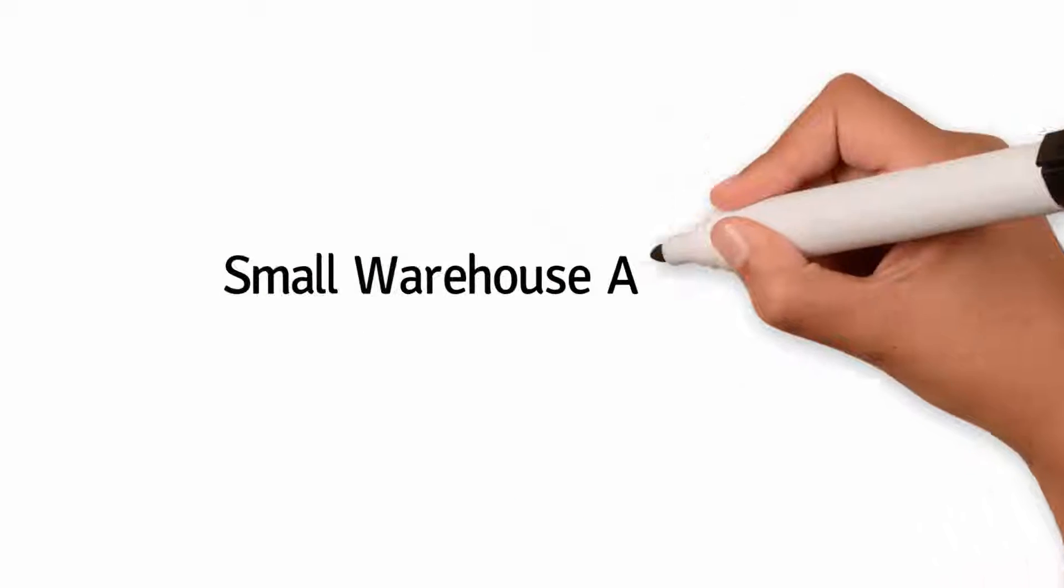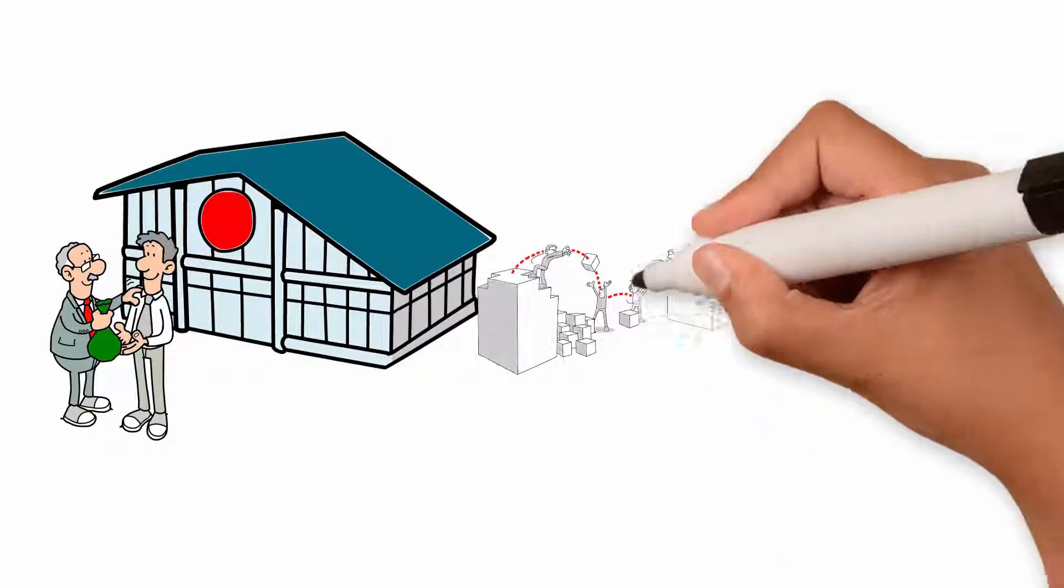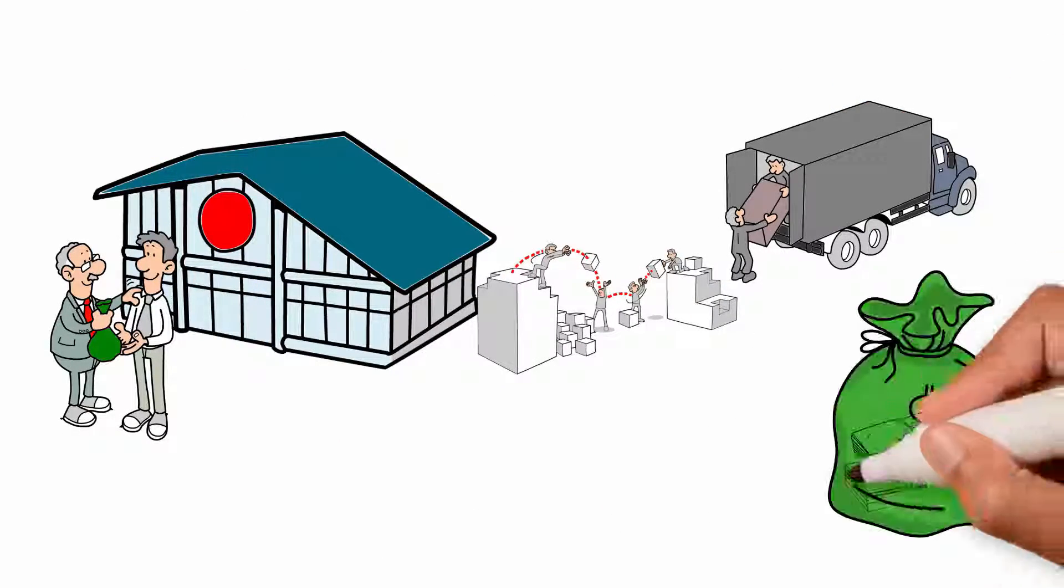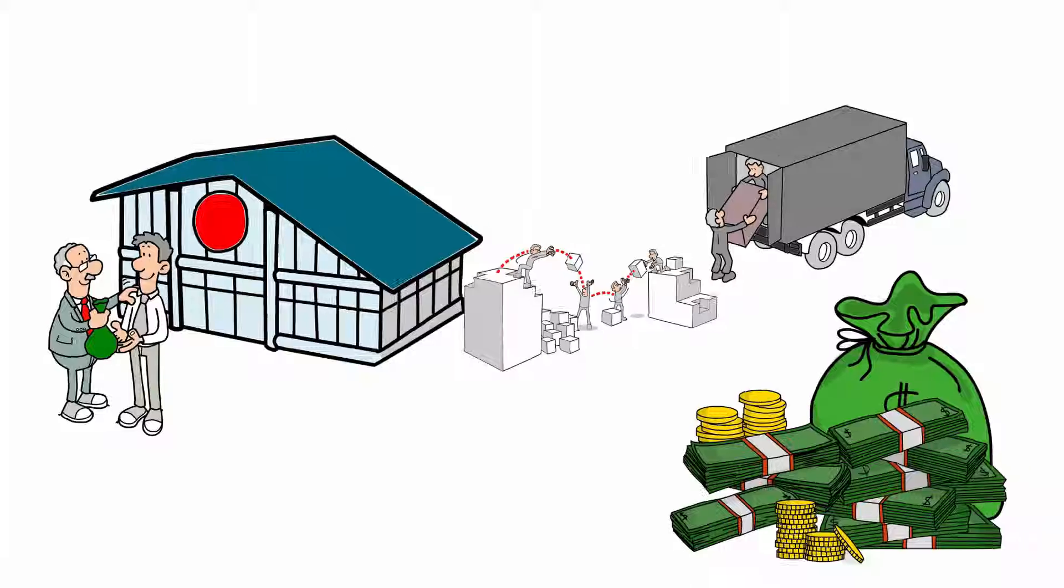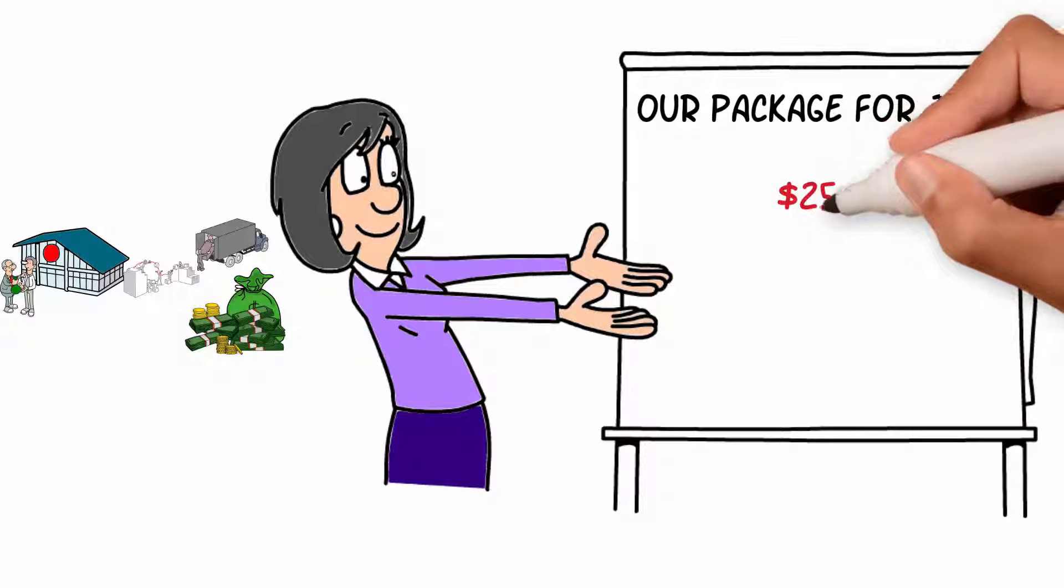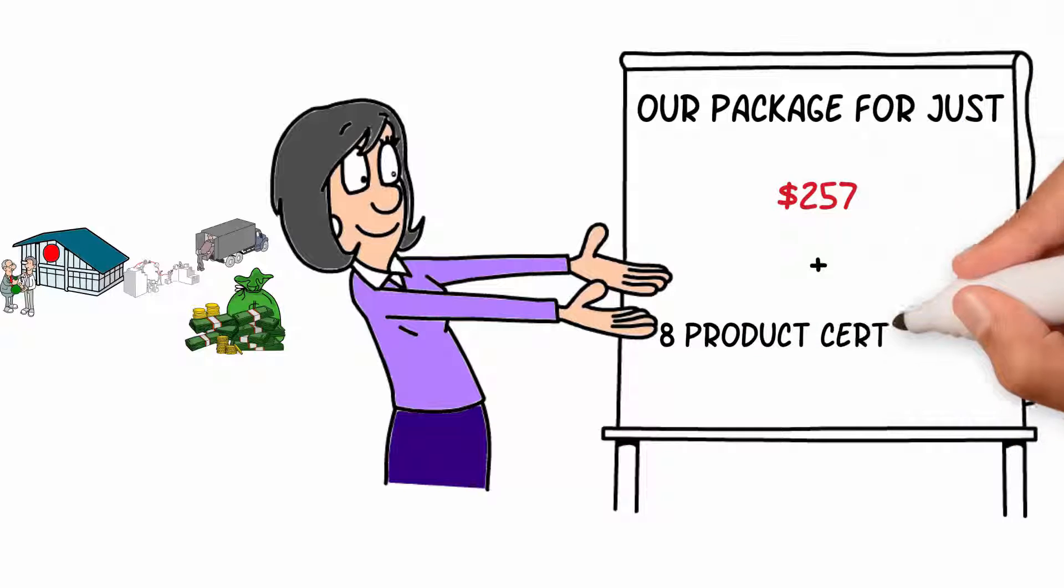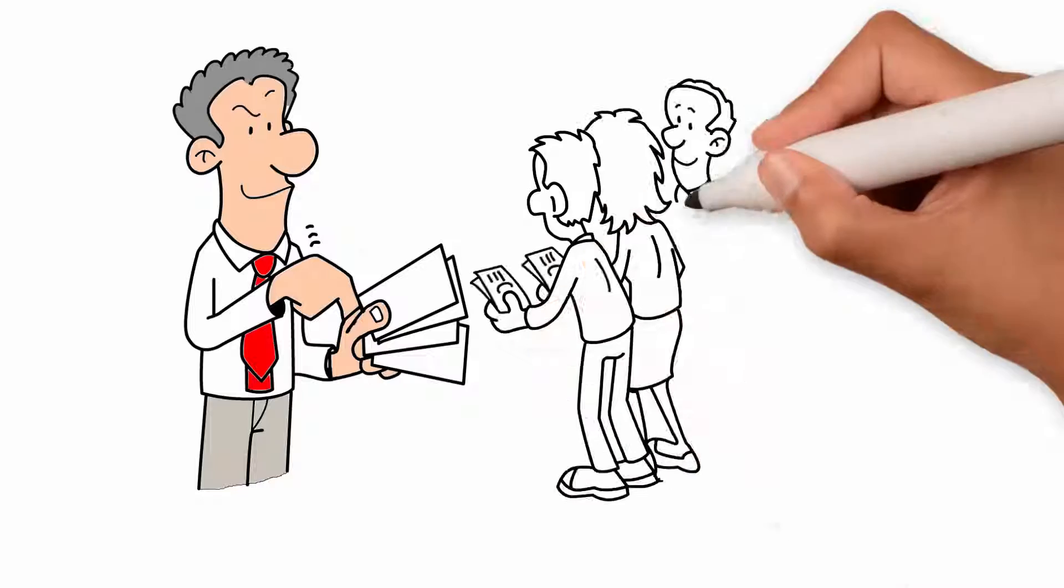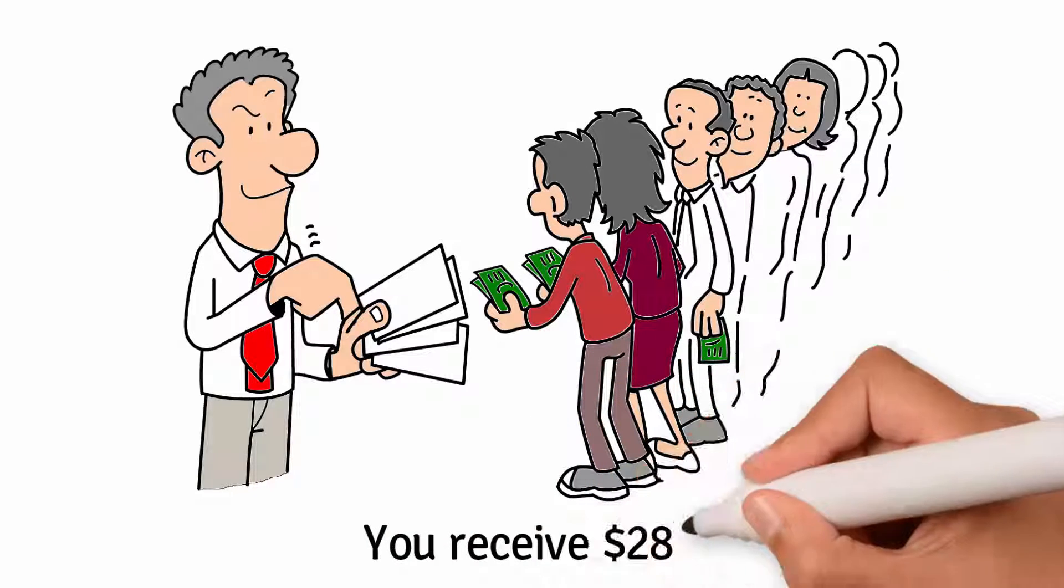Small warehouse affiliate: Instead of you taking a major risk of buying a building and stocking it with products that cost you hundreds of thousands of dollars, you can get our package for just $257. We give you eight product certificates to sell to your customers. When you sell your eight certificates you receive $280.